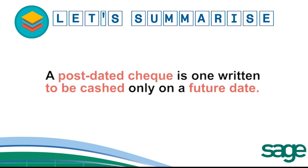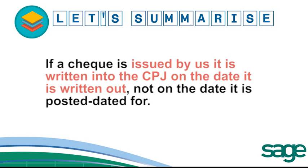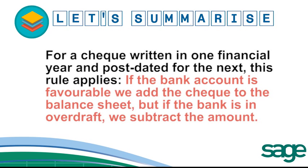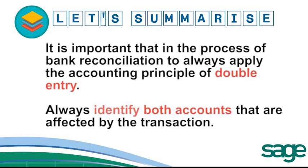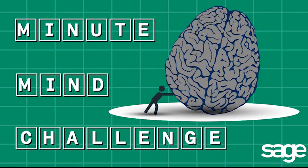A post-dated cheque is one that is written to be cashed only on a future date. If the cheque is issued by us, it is written into the CPJ on the date it is written out, not on the date it is post-dated for. For a cheque written in one financial year and post-dated for the next, this rule applies: if the bank account is favourable, we add the cheque to the balance sheet, but if the bank account is in overdraft, we subtract the amount. It is important that in the process of bank reconciliation, you must also apply the accounting principle of double entry. Always identify both accounts that are affected by the transaction.